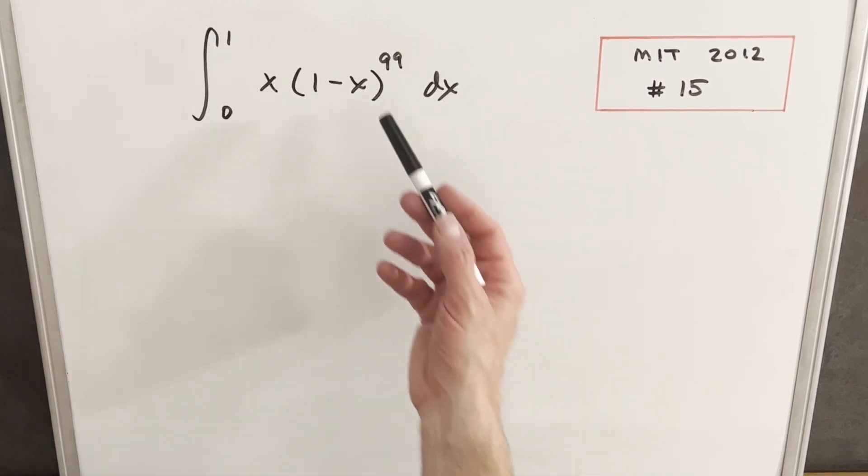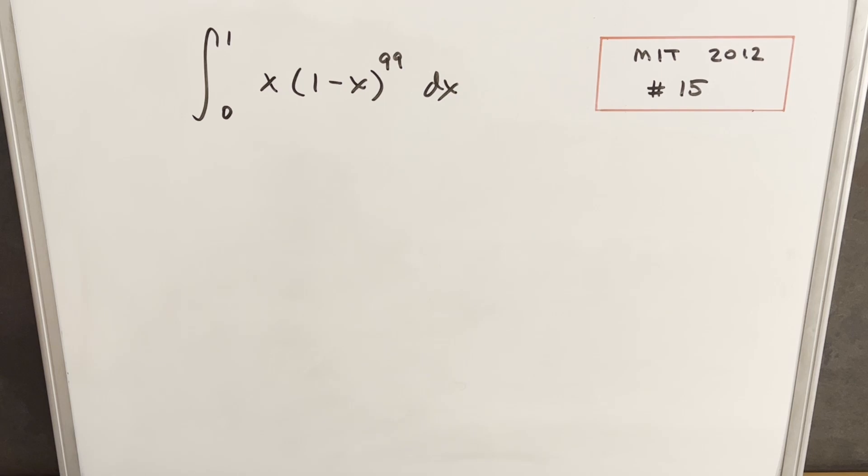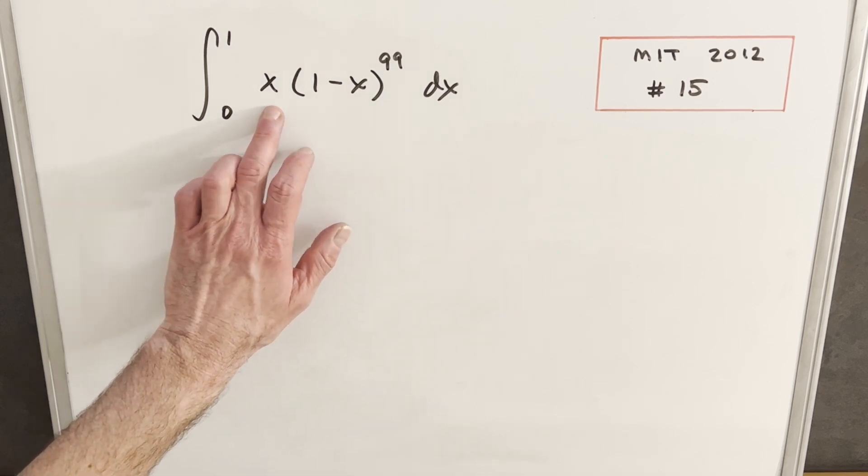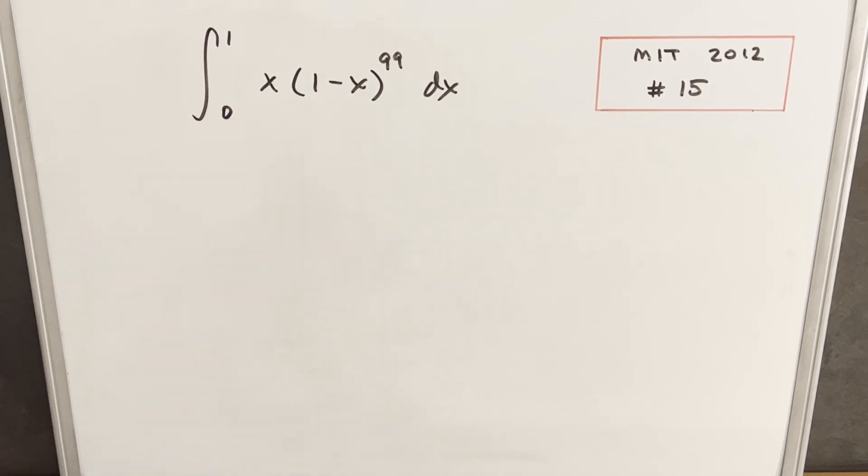Okay, now at first it could look a little intimidating. We've got this large power, 99, and I've done a video like this in the past where what we can do is we can kind of shift the burden from the x to the 1 minus x with a u substitution. It's not too bad, so let's see how this is going to work.